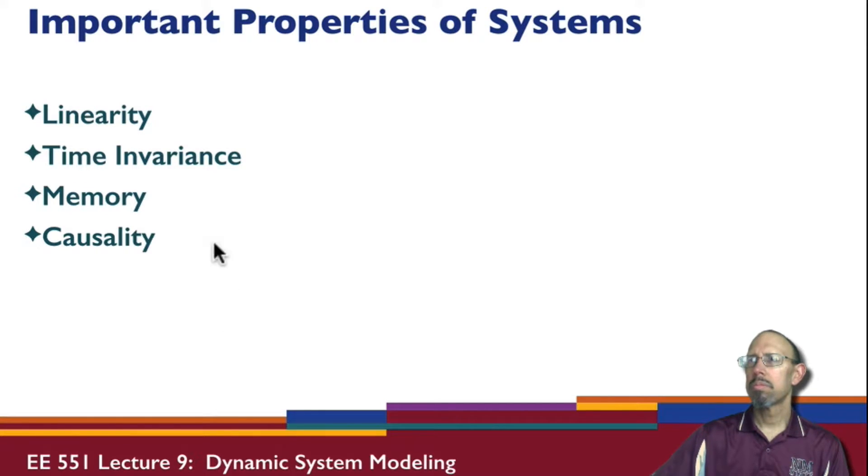Now, there are important properties of systems that we consider: linearity, time invariance, memory, causality. These are four important properties that we're going to take a quick look at in terms of systems.